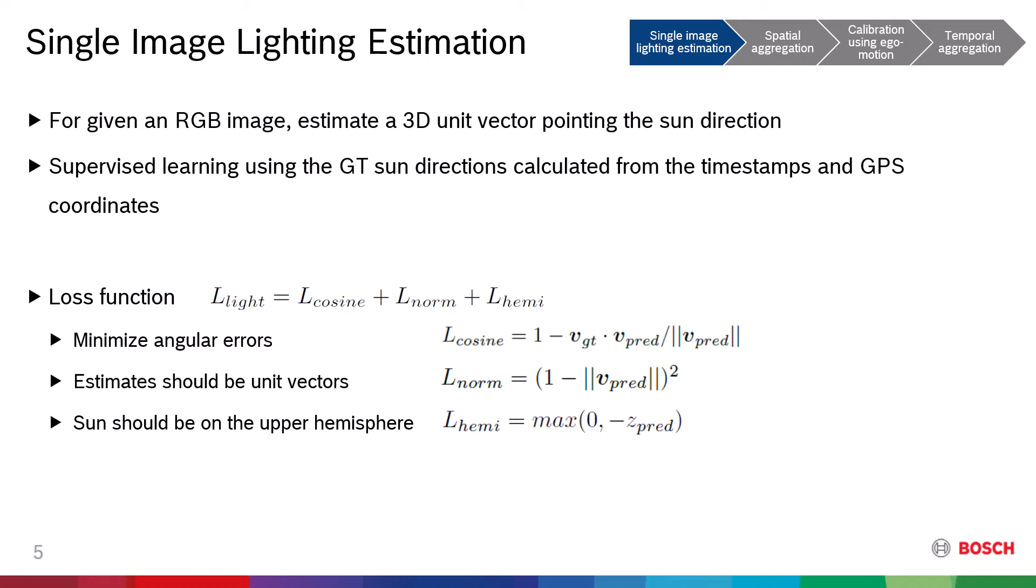The training is guided by three loss functions. The first and most important loss function is the cosine loss, which minimizes the angular difference between the ground truth and the predicted sun directions. The second loss function ensures that the estimates are unit vectors. The last one is to assure the sun is in the upper hemisphere as we do not consider nighttime where there can be more than one light source. The final loss function is the sum of the three loss functions.